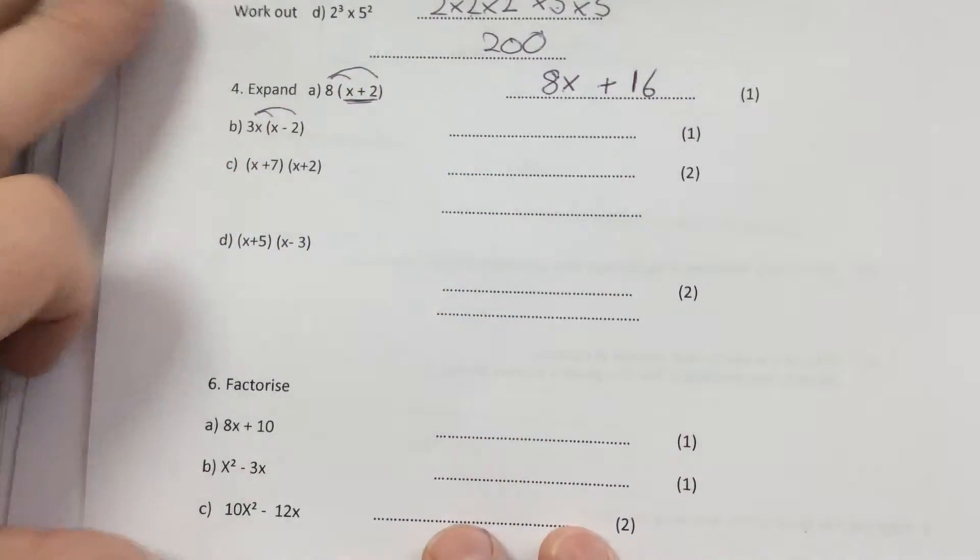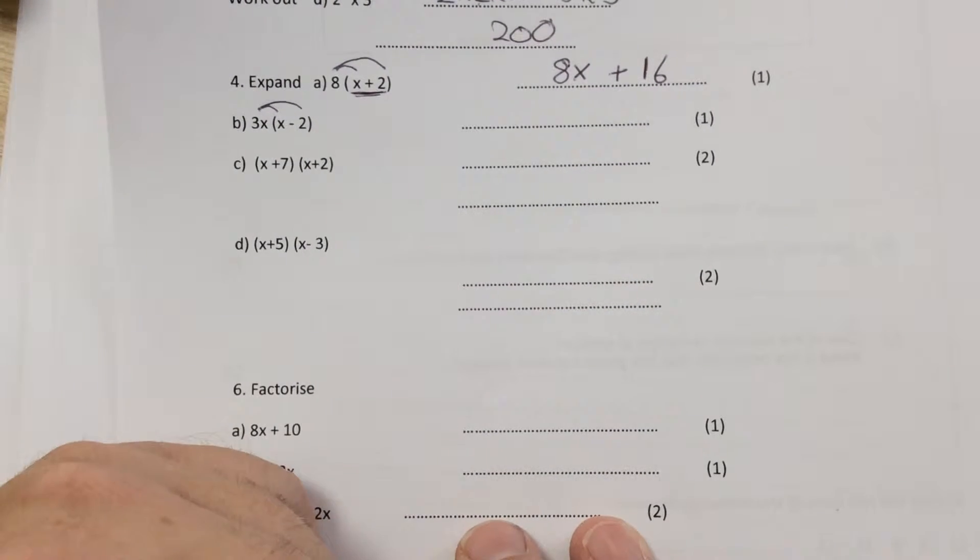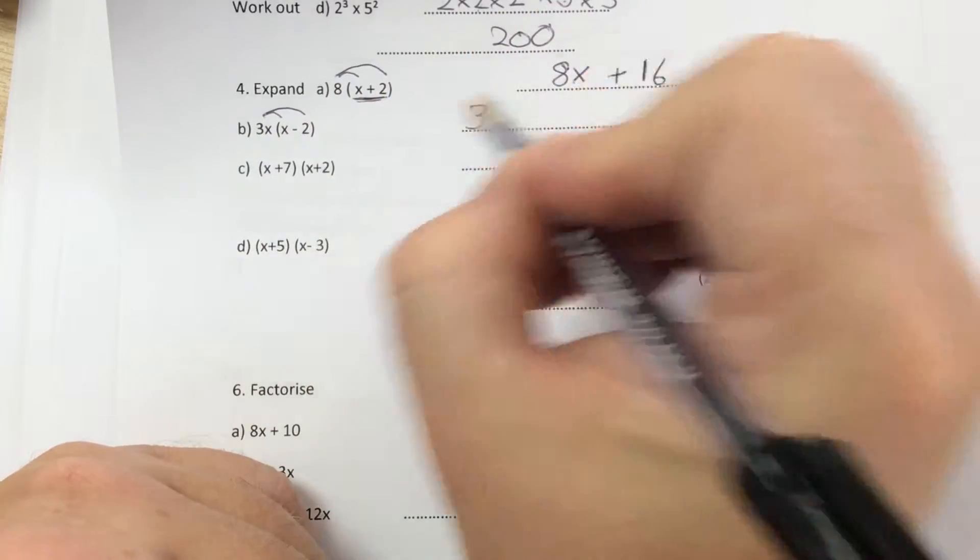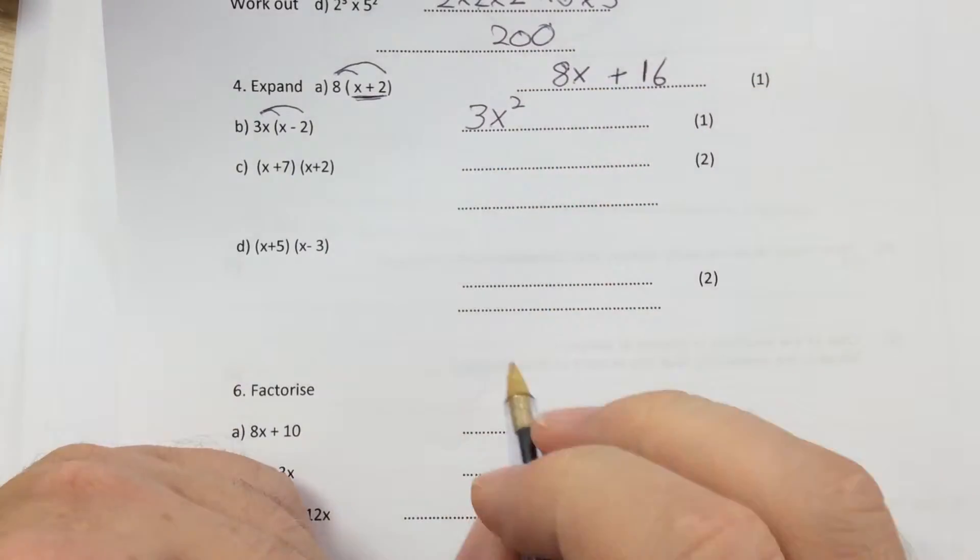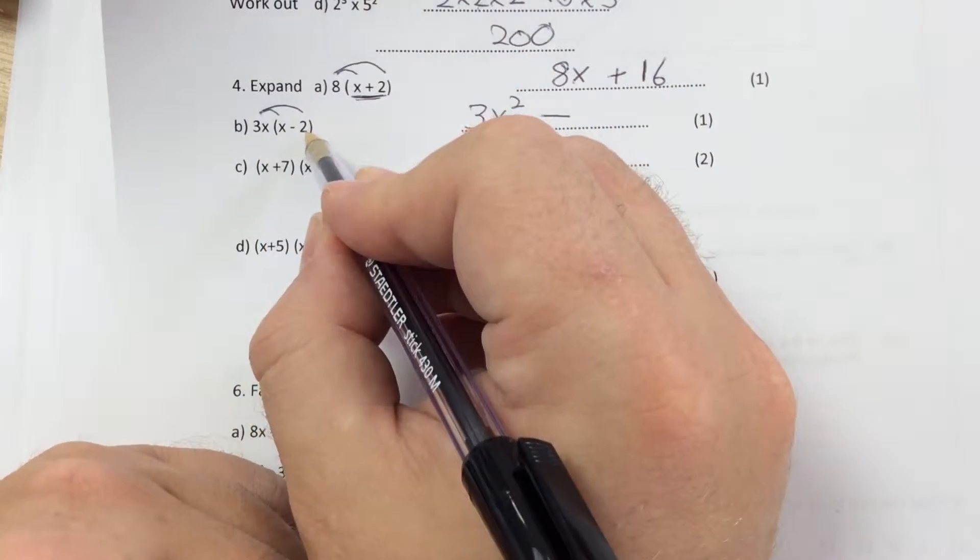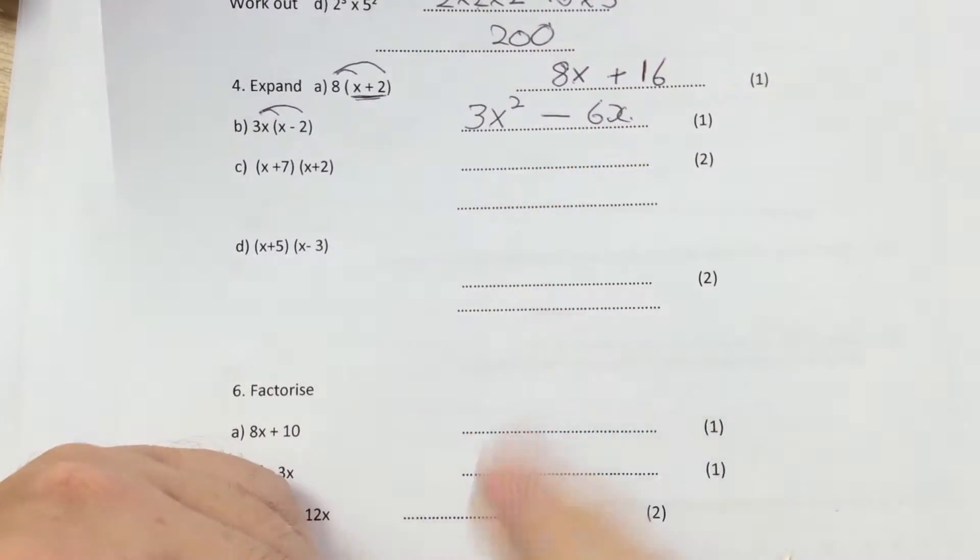With the next one, you're doing 3x times x and then 3x times minus 2. So 3x times x becomes, there's only a number 3 in the first bit, so it's 3. And then x times x makes x squared. And then it's take away and then you've got 3x times 2. 3x times 2 is 6x.